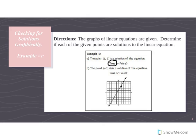Next, the point (-2, 0) — is it a solution of the equation? Let's go to the left two, and we aren't going up or down any, so we land at that point right there. That point is actually not on the line, so that means we have a false statement.